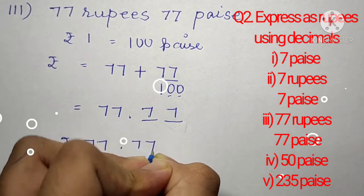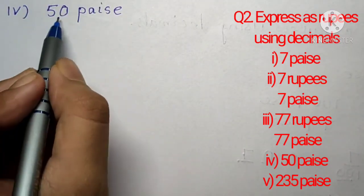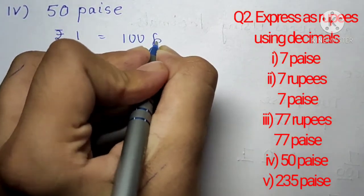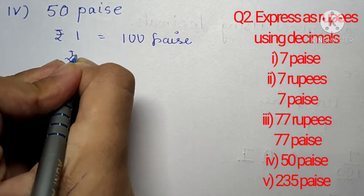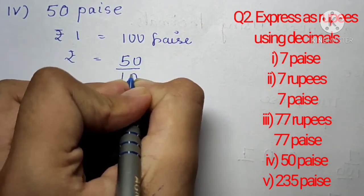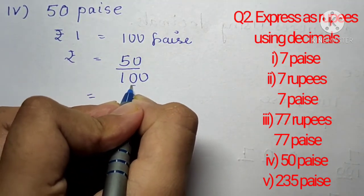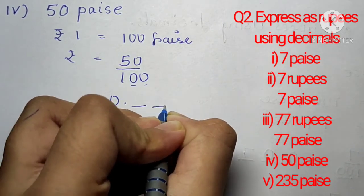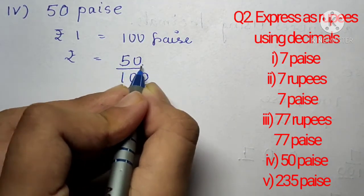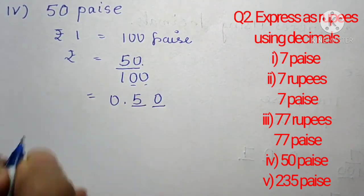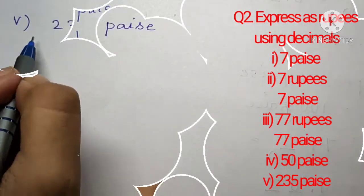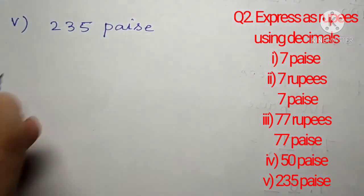Question number 2, part 4: 50 paise. Rupees 1 equals 100 paise. To convert 50 paise into rupees, we write 50 divided by 100. Since 100 has two zeros, two digits are needed on the right hand side of the decimal. 50 already has two digits, so no extra zeros need to be added. The answer is rupees 0.50.